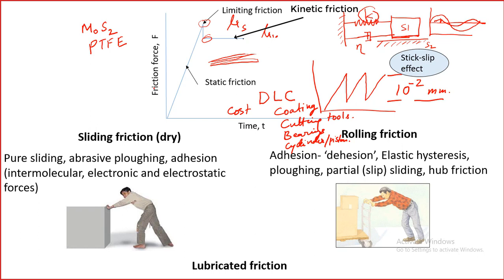Regarding the graph of eta: the x-axis is time and the y-axis is amplitude of stick-slip. Amplitude means how much deflection you are seeing in the system response. The more the amplitude, the more the response, which means the system is not performing well.